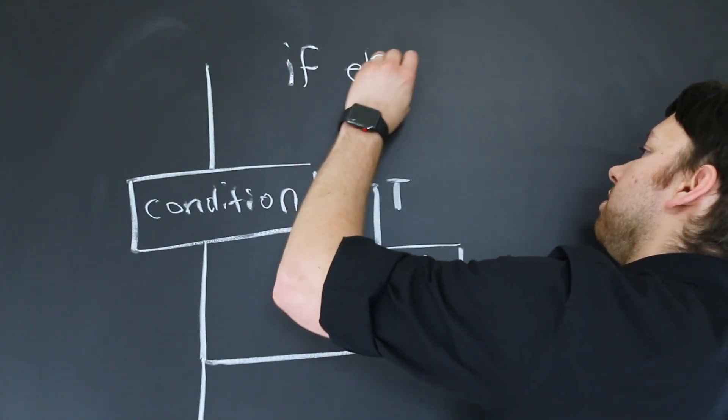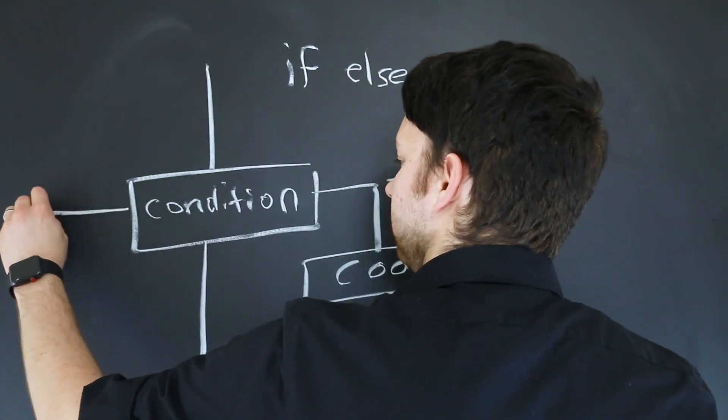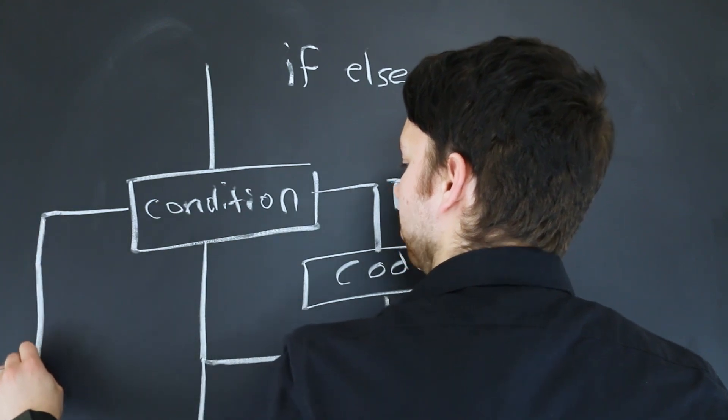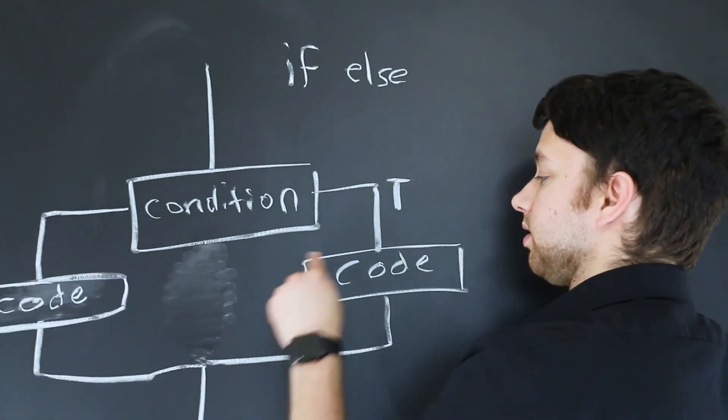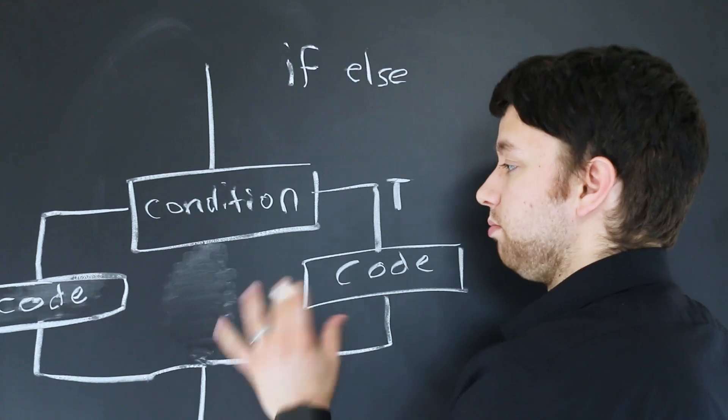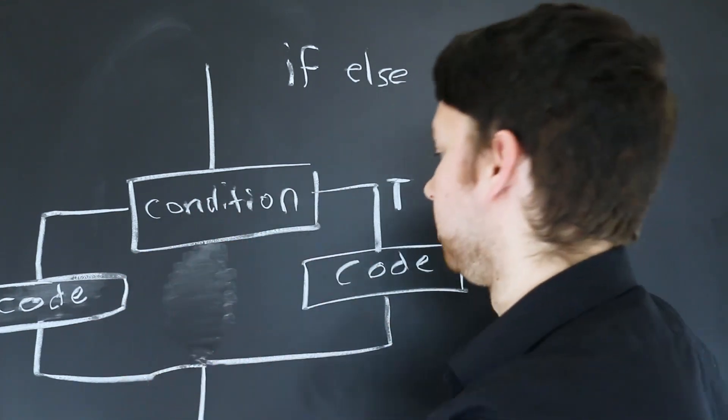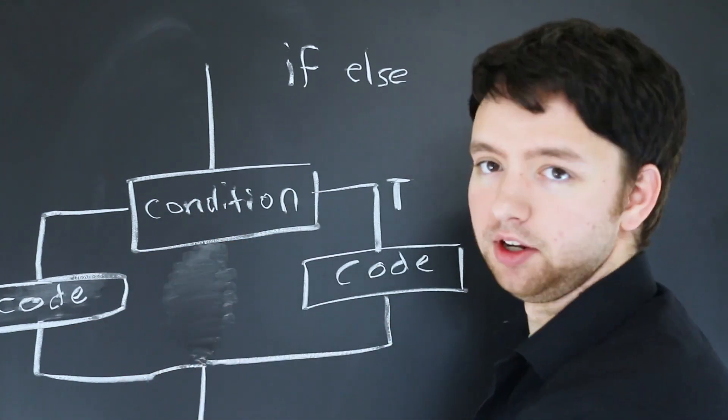If with an else is going to be a little bit different in that we can branch this way as well. And now we have to go one of these ways. So we're either going to execute this one or this one. But not neither. We have to execute one of them. It's the only way to continue on in the program.